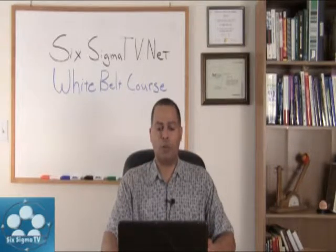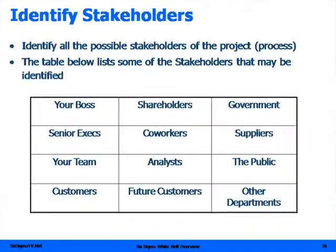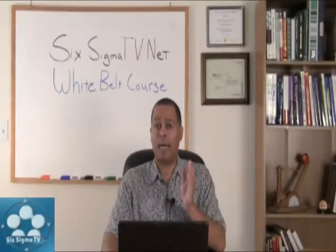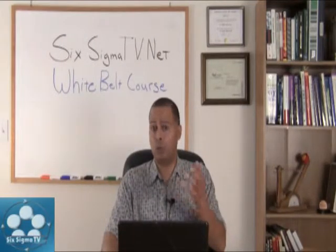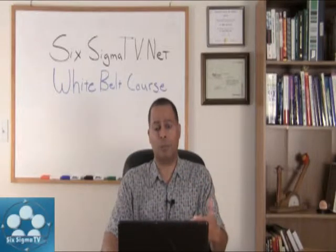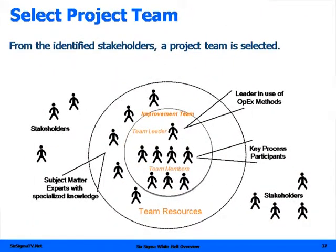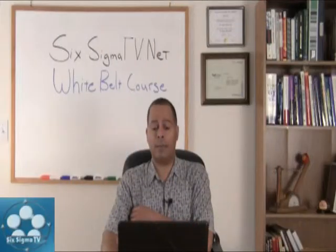You want to look at your stakeholders — your boss, coworkers, government, future customers, your team — everyone who has a stake in this project. Then select your project team. You want a master black belt, or at minimum a black belt, to help and coach you, especially early in your Six Sigma implementations. That black belt or master black belt will help you stay on track and coach you going forward.